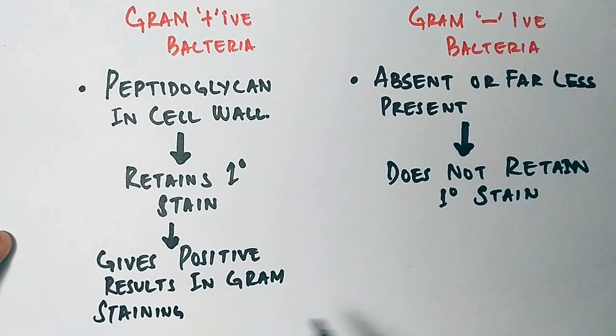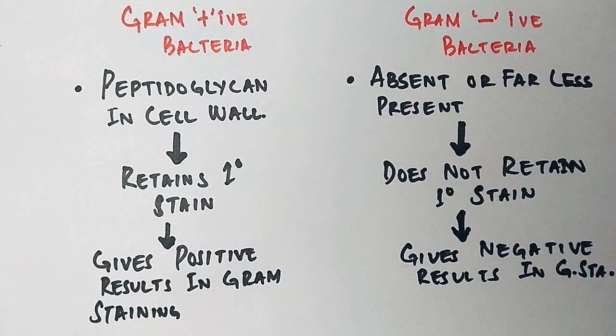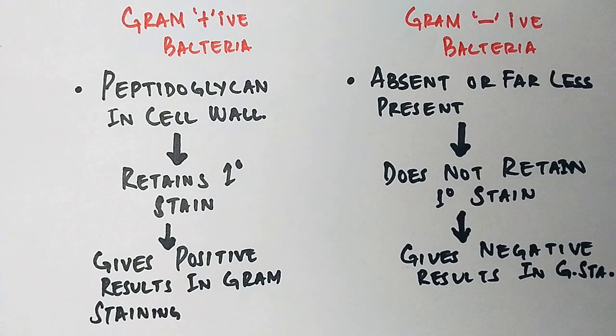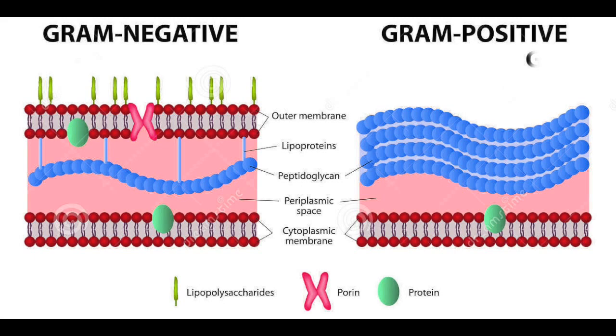Whereas another bacteria which has less peptidoglycan in cell wall we call gram-negative bacteria, because it gives null results in gram staining. Here in the diagram you can see the gram-negative bacteria cell wall on left side and gram-positive bacteria cell wall on right side. The main difference we see here is the peptidoglycan layer.